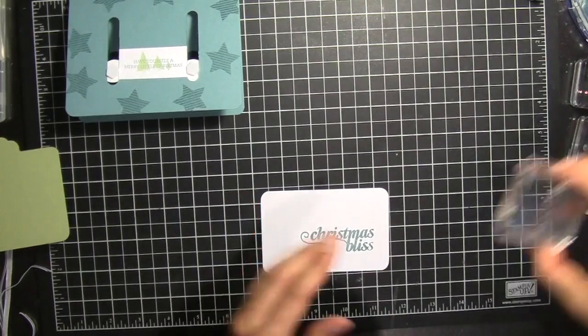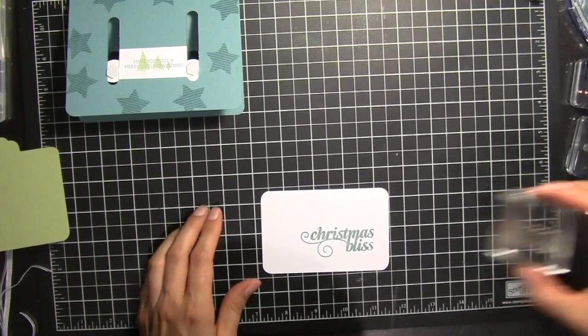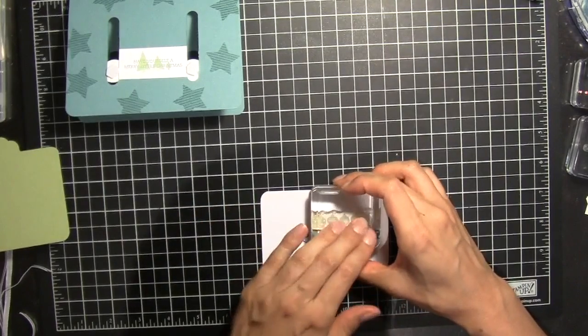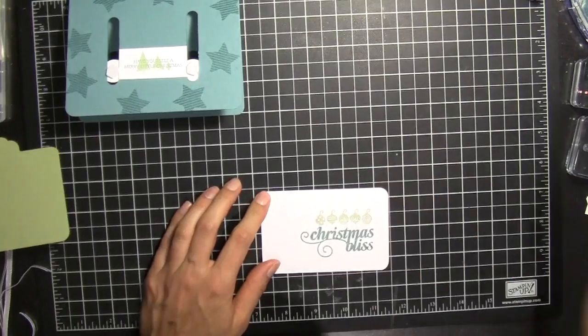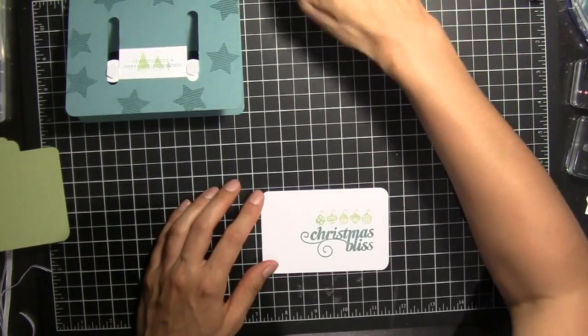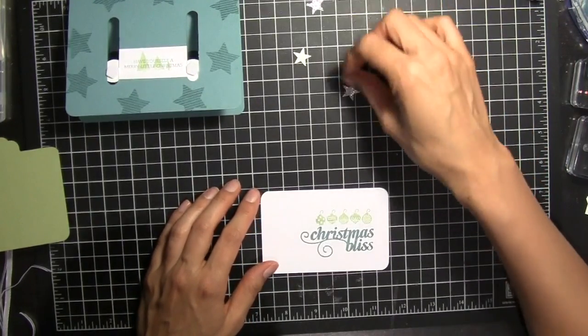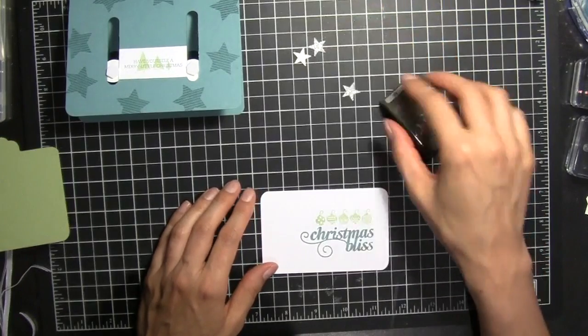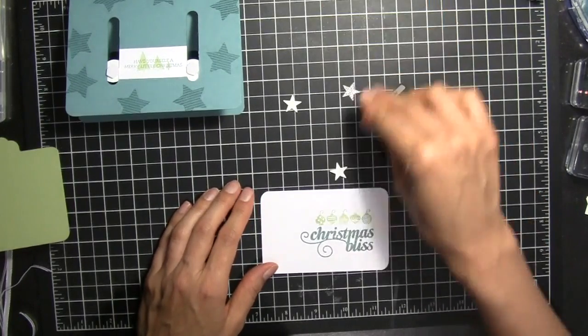And then we're going to do the ornaments on top in Pear Pizzazz. And then I've punched out a couple stars with the star punch and the silver glimmer paper.